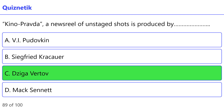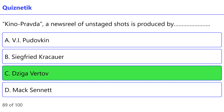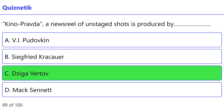Kino Pravda — a newsreel of on-stage shots — is produced by: the correct option is C: Dziga Vertov. Audition is a trial performance of talents to assess their ability to act: the correct option is D: Audition.